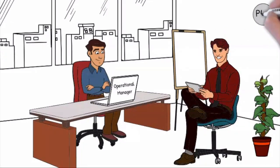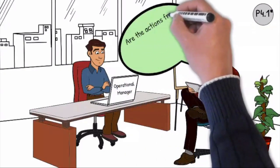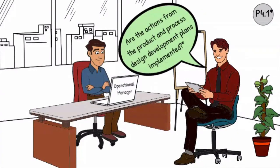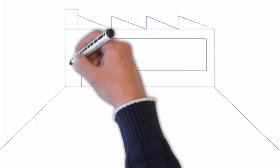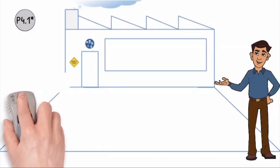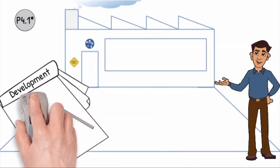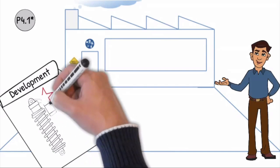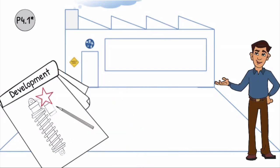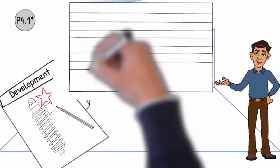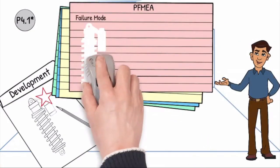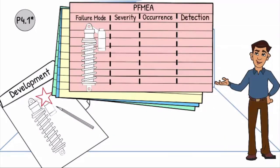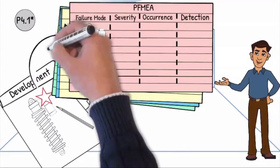Question P4.1: Are the actions from the product and process design development plans implemented? The conditions defined in the development planning methods for product and process development were applied so that after implementation in serial production the product fulfills the product conditions of use, function, reliability, and safety. In the development phase a process FMEA was used to ensure that the product and the process comply with the requirements of the customer. Special characteristics are identified and noted in the relevant documents.